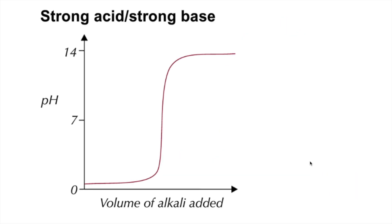We're going to look at all the different acid-base combinations and explain the key parts. This is a strong acid-strong base titration curve. You can see it starts at a very low pH, strong acid, and finishes at a high pH, strong alkali. The key thing about this curve is that the pH at equivalence is 7.